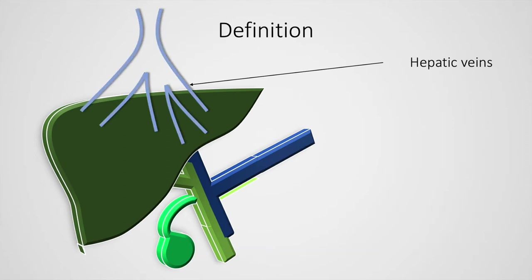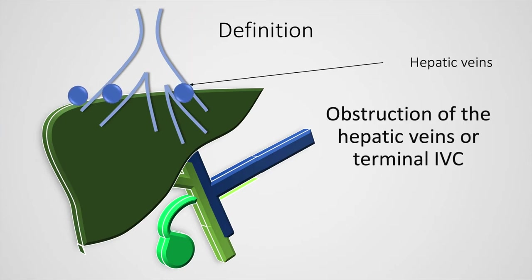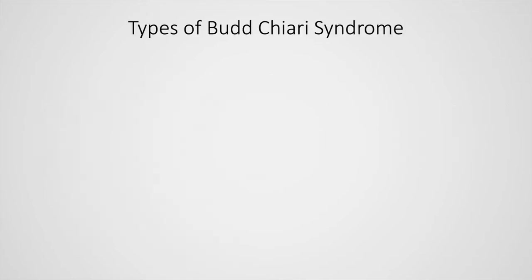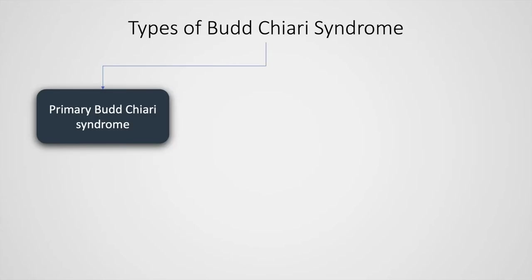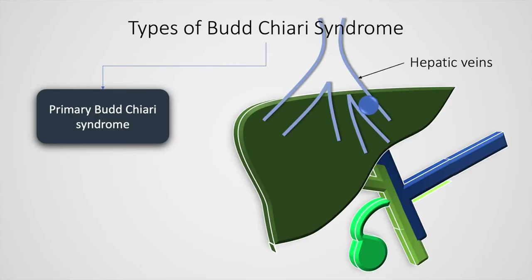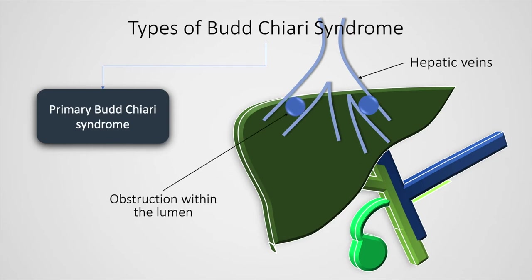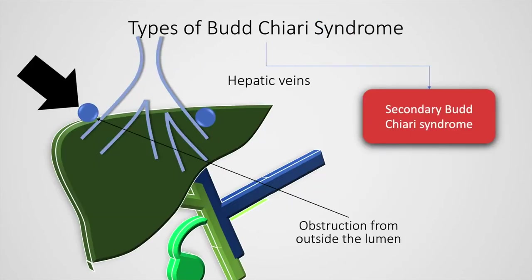The definition of Budd-Chiari syndrome is that it represents the obstruction of the hepatic veins or the terminal inferior vena cava. Budd-Chiari syndrome may be classified into two types: primary Budd-Chiari syndrome, in which there is obstruction from within the lumen of the hepatic vein, and secondary Budd-Chiari syndrome, in which there is obstruction from outside the lumen of the hepatic vein.